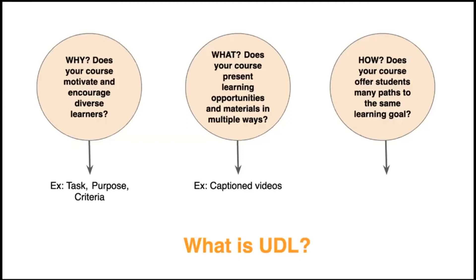The third question is the how: how can students show that they are successful? Do you offer many paths to the same learning goal? We've already talked about this in terms of your assignments and giving students some choice. I loved hearing about classes this fall where students were given choices about the language they're going to use and about the person they want to work with — that was so inspiring. The learning goal is the same for all students, but giving them freedom and choice allows them to play to their strengths.